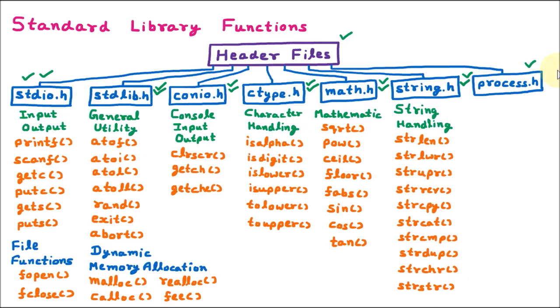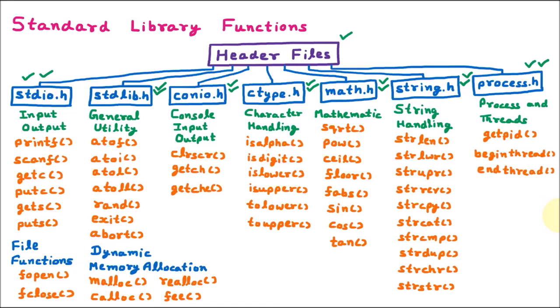The next header file is process.h, used to handle processes and threads. It has various functions: getpid is used to get the process ID. A process can have multiple threads — just like Google Chrome has various tabs, similarly a process has multiple threads. beginthread is used to create a thread. endthread is used to close a thread of a process.